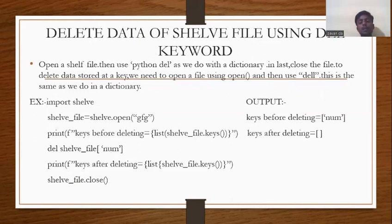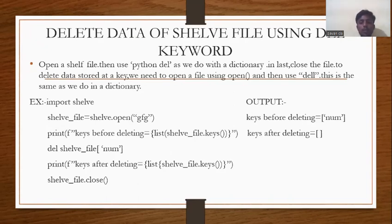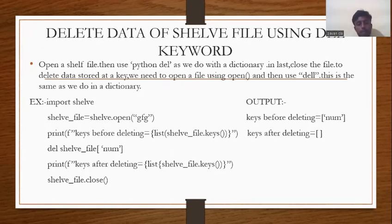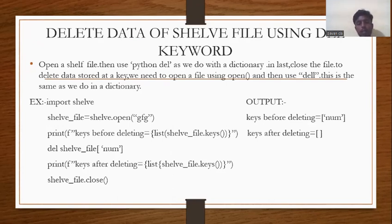Now, how to delete data from a shelf using the del keyword. Open a shelf file, then use Python's del as we do with a dictionary, and close the file. To delete the data stored at a key, open the file using open and then use del — the same as with a dictionary. Example: import shelf, then shelf_file = shelf.open('gfg'). Print keys before deleting: print(f'keys before deleting = {list(shelf_file.keys())}').